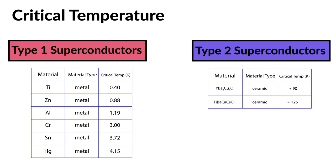Type 2 superconductors, on the other hand, are often made of metallic compounds and alloys, and have much higher critical temperatures. Those with a critical temperature above 77 Kelvin are useful since they can be cooled with cheaper liquid nitrogen.